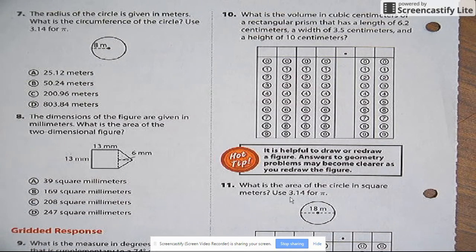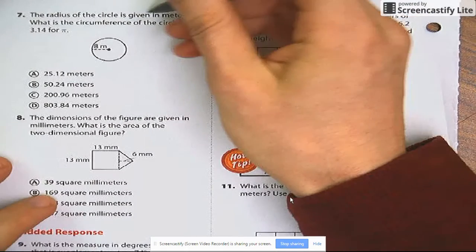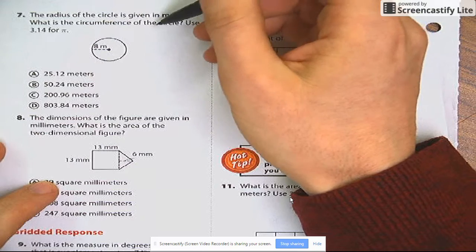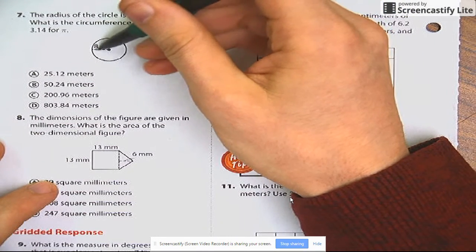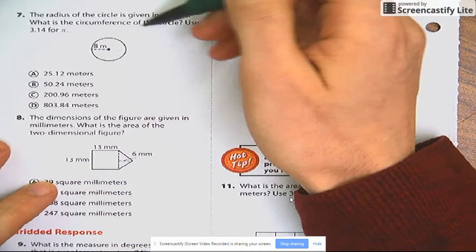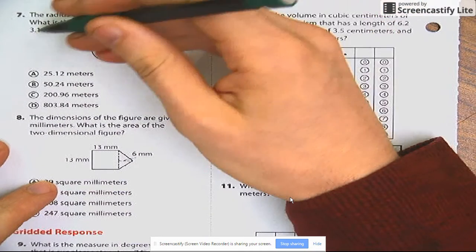And now let me go to the back side. Question number seven. The radius of the circle is given in meters. Yes, it is. Eight meters. In fact, I'll even tell you that it's the radius, in case you forget what radius is. What is the circumference of the circle? You use 3.14 for pi.